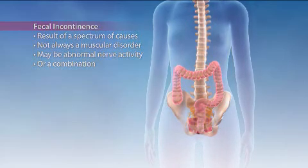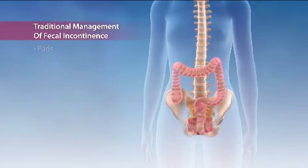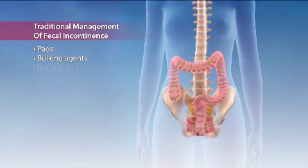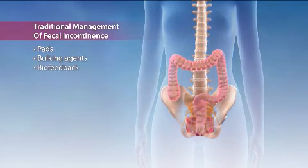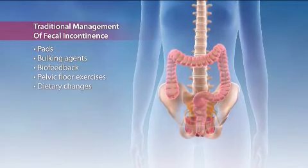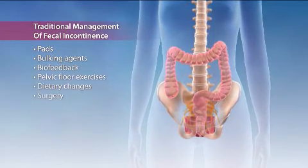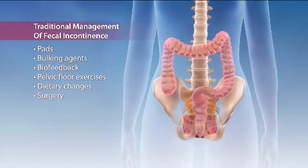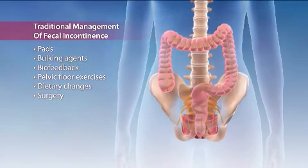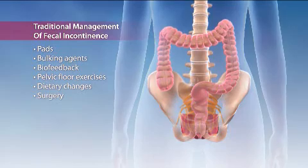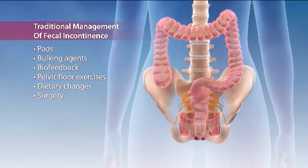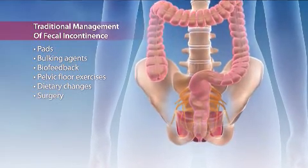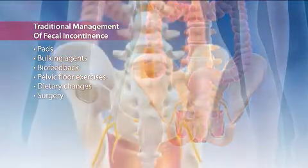Traditional initial management of fecal incontinence includes pads, bulking agents, biofeedback, pelvic floor exercises, dietary changes, or surgery, particularly to the anal canal or sphincters. While these approaches may alleviate fecal incontinence for some, they are not effective for everyone and may not address the causes of FI.